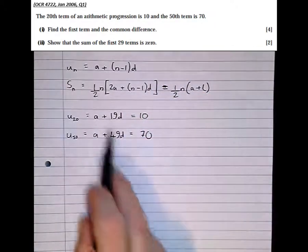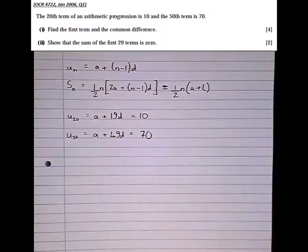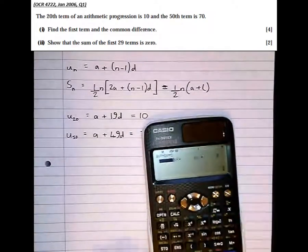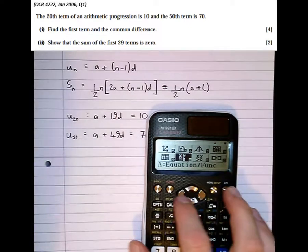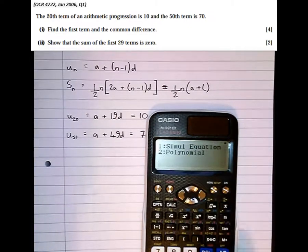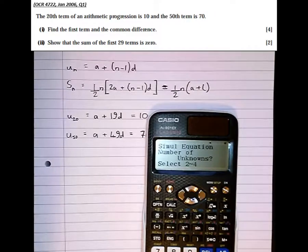As we can see here now, we've got two sets of simultaneous equations to solve. Well luckily, our calculator has a function for solving equations, so we go into equation mode on the calculator. Simultaneous, and there's two unknowns, a and d.